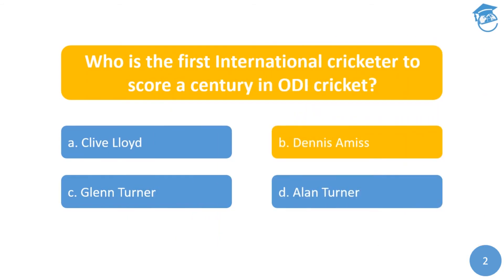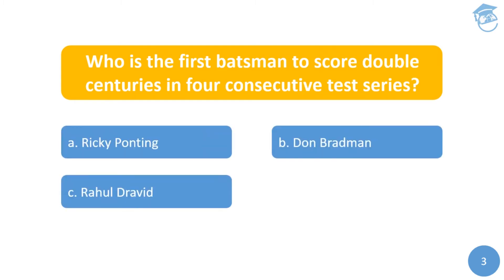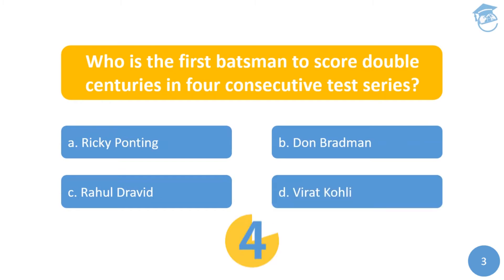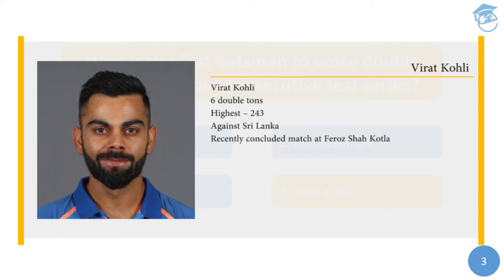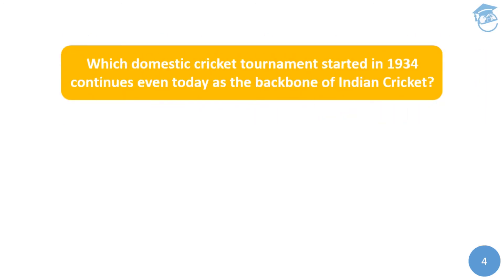Let's move on to the next question: who is the first batsman to score double centuries in four consecutive test series? Your options are A) Ricky Ponting, B) Don Bradman, C) Rahul Dravid, or D) Virat Kohli. The answer is Virat Kohli. Kohli has scored six double centuries, with the highest being 243 against Sri Lanka in the recently concluded match at Feroz Shah Kotla in New Delhi.